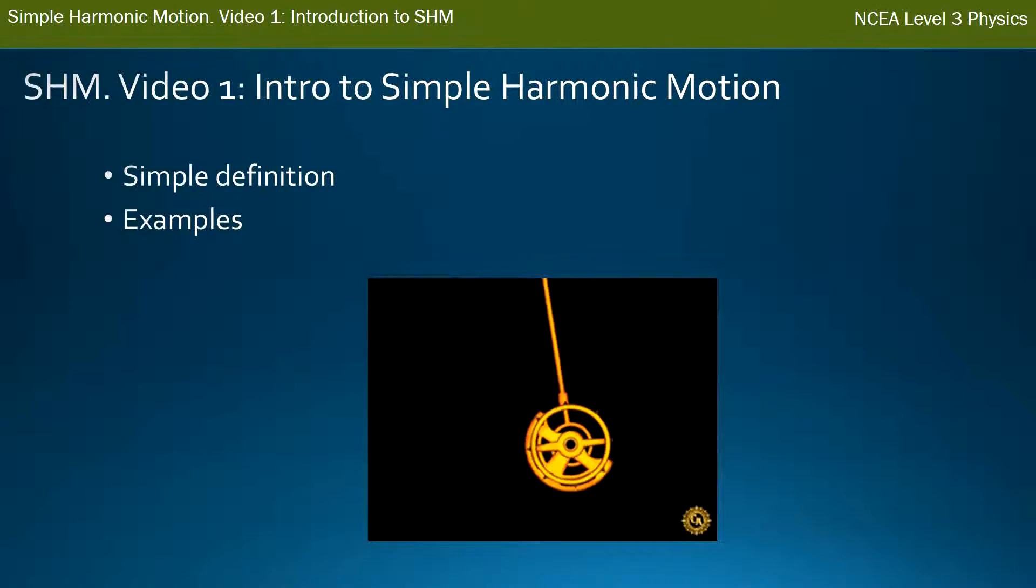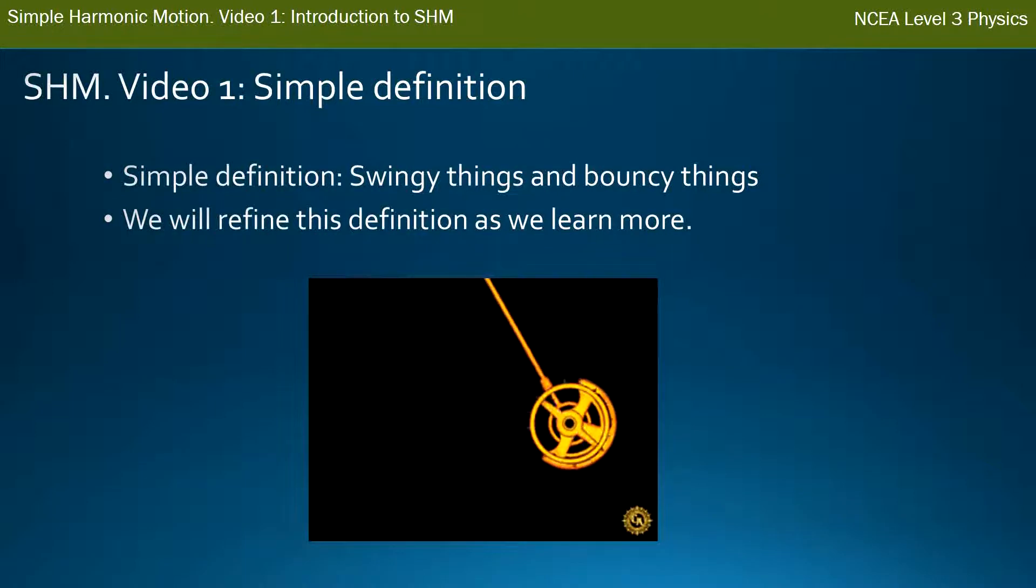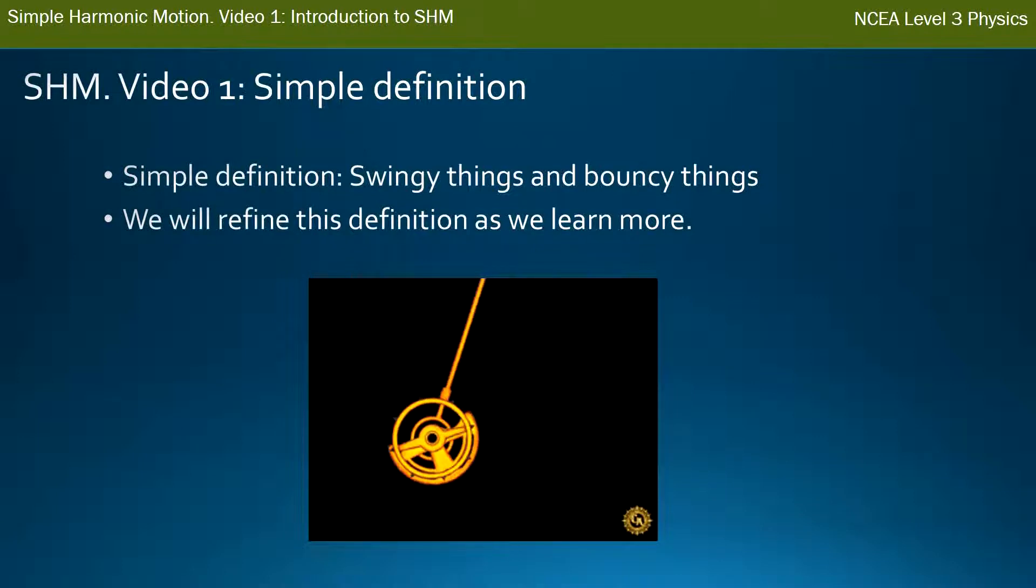We're going to give a very simple definition for simple harmonic motion and two examples. Our simple definition to start with, which is by no means the one we'll end up with, is simple harmonic motion is just swingy things and bouncy things. Very simple.